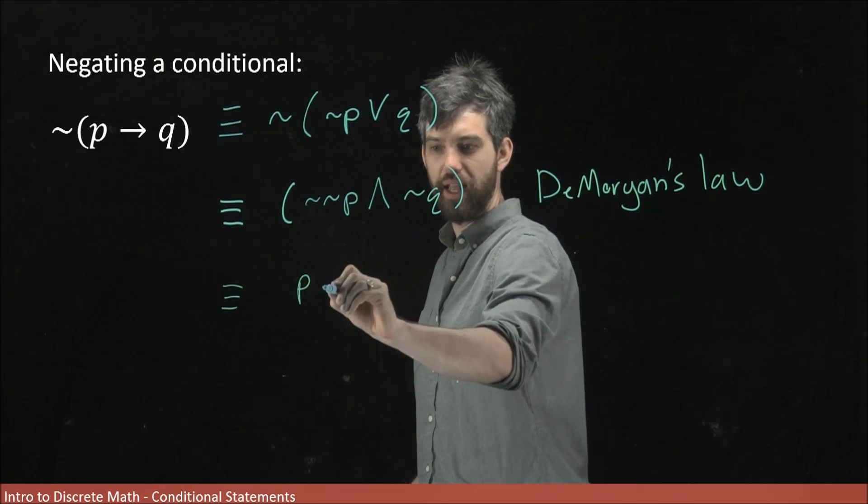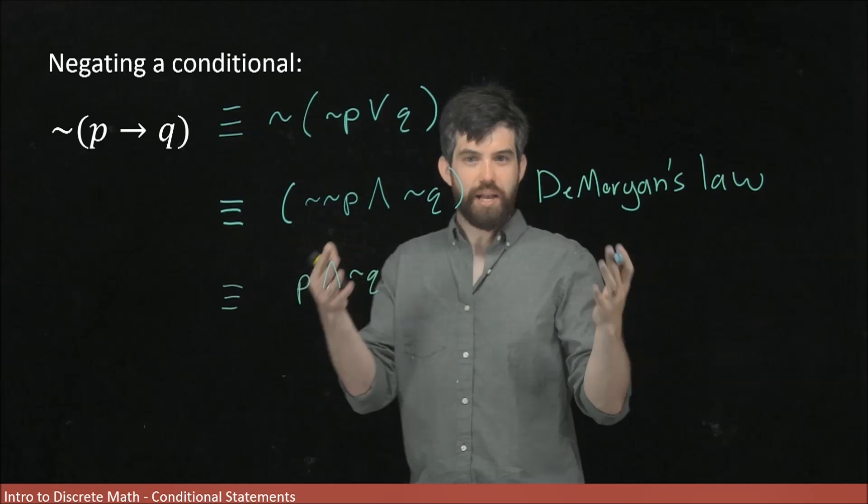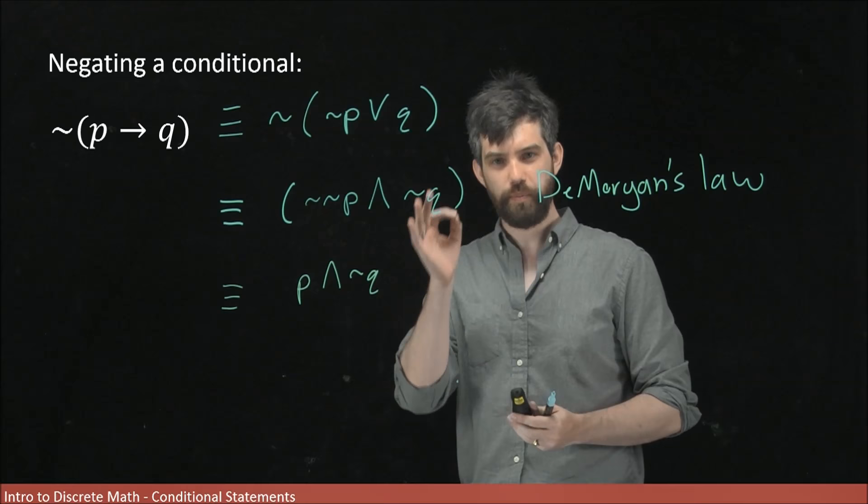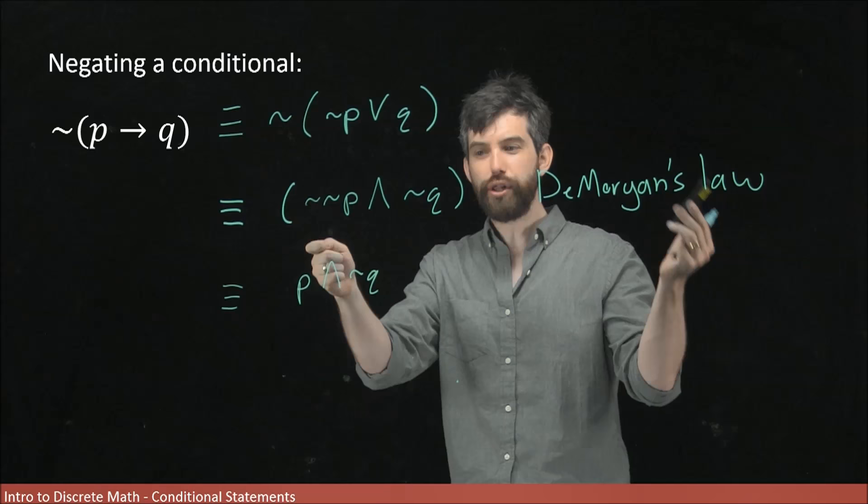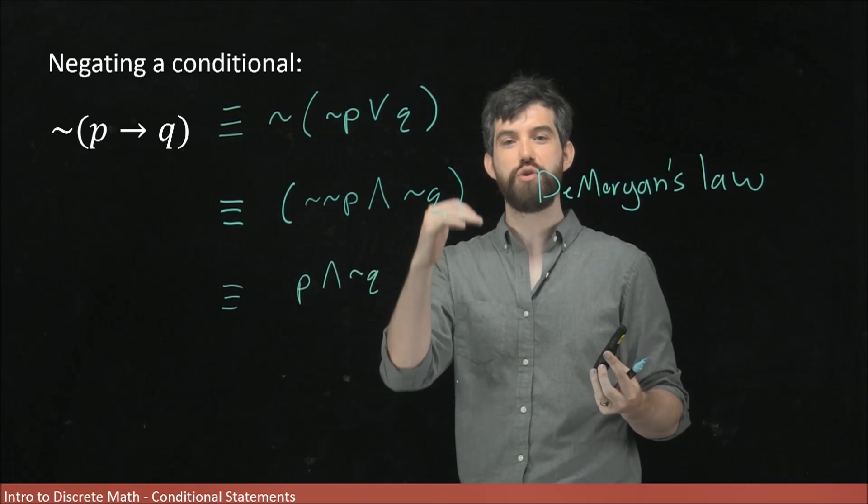Now this should make some sense to us. If we think about what an implication was, there was only going to be one way that the implication was not going to be true: when the assumption, the hypothesis, was true but the conclusion was going to be false. That was the only one in our truth table that gave a value of false for the implication. And that's what we have here.